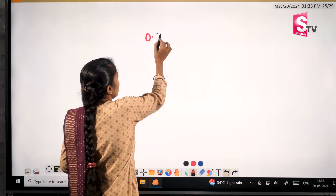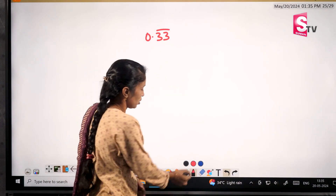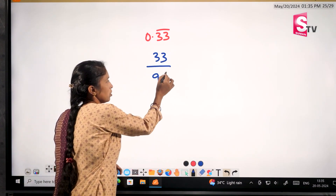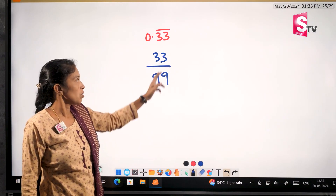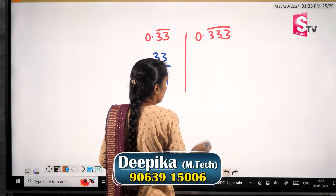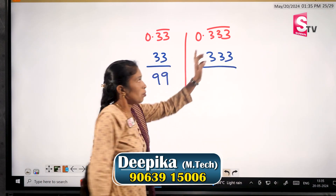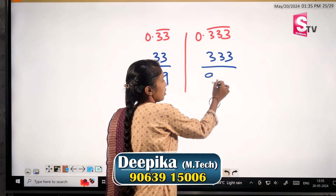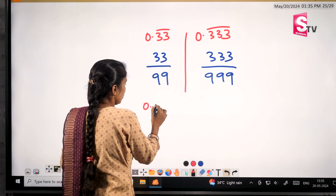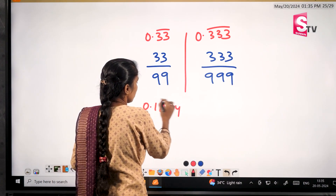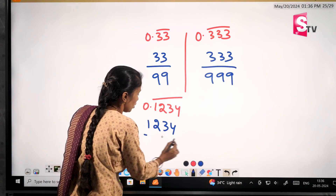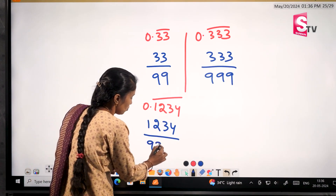So this is 0.3 bar, 0.33 bar. So 33 is 33. Here we have 2 digits — 2 digits are 2 nines. So here we have 2 nines. Same question: 0.33333 bar. So we have 3 as 3. Here we have 3 digits, so we have 3 nines — 1, 2, 3 — so we have divisible. So we have 0.1234 bar. We have 4 digits — 0.1234 — so we have 4 nines: 1, 2, 3, 4.